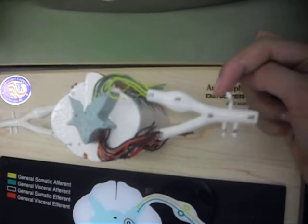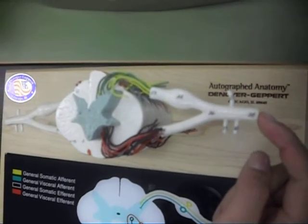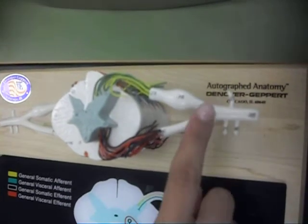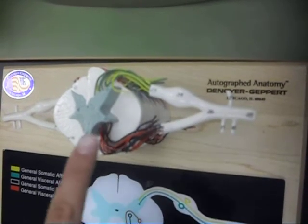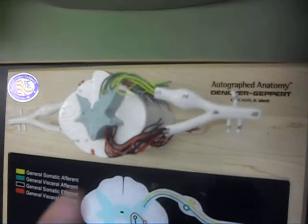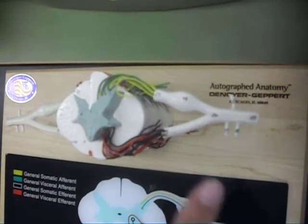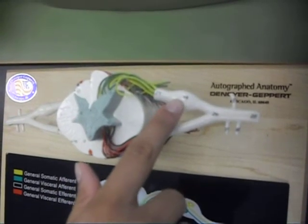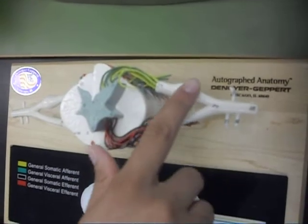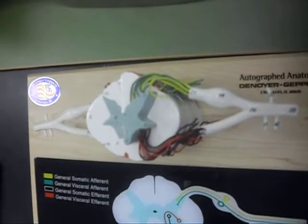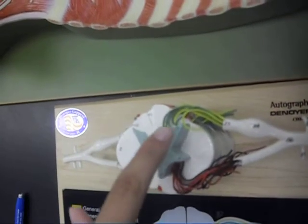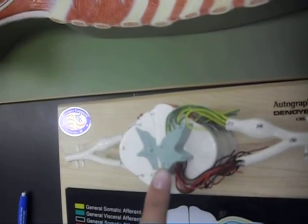This is the dorsal ramus. This is the ventral ramus. This is the spinal nerve. This is the ventral root. This is the dorsal root. This is the dorsal root ganglia. And this is the dorsal, lateral, and ventral horns.